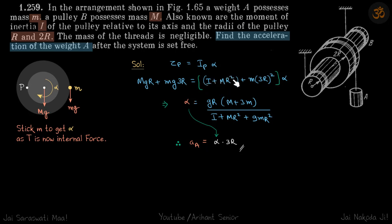So I of the spool which is I plus mr squared, and I of the small mass is m into 3r whole squared. So from here we get the value of alpha. And because this point is at rest, the acceleration of the weight will be alpha times 3r, so that will be our answer.